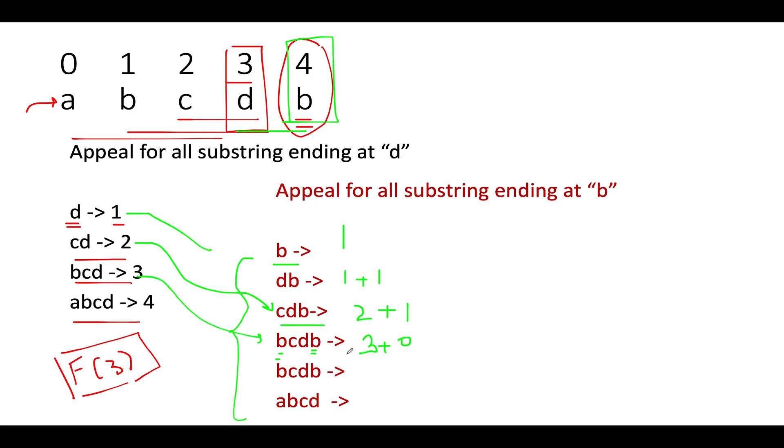So we can derive this three directly from here. Let's proceed ahead. Next we see is a-b-c-d-b and what would be the appeal for this one? It would be equal to four plus zero. Why zero? Because you can see that b is getting duplicated over here, so whatever appeal can be derived for a-b-c-d we can directly utilize it for this particular case.